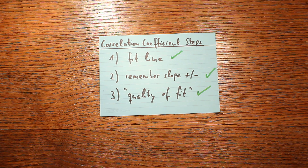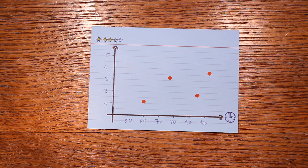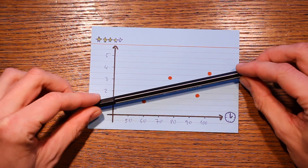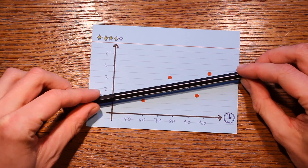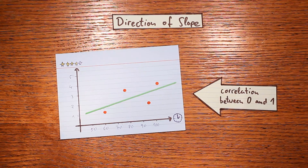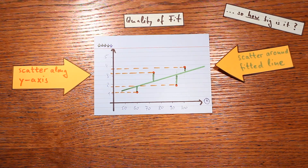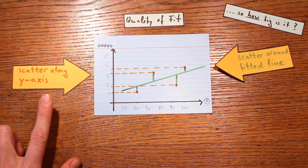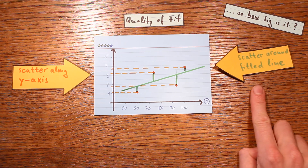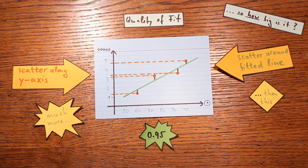In the previous video, we covered how to get the correlation coefficient in three simple steps. First, you fit a straight line to your scatter plot. Second, you remember if the slope is positive or negative — that tells you the sign of the correlation coefficient. Third, you compare the scatter along the y-axis against the scatter around the fitted line, which tells you the magnitude.